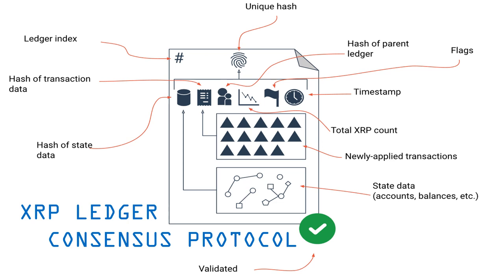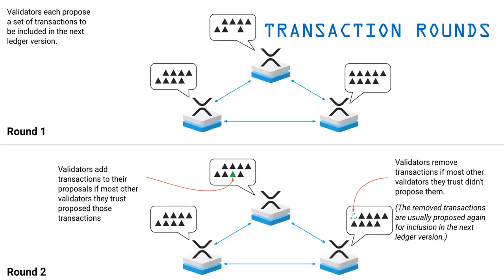Most people are aware that no more XRP can be made, but it is a good segue into invariant checking. All XRP that could ever exist has already been created. It has set amounts released from escrow over time. The transaction rules are deterministic and there is no way to create more XRP than already exists. It is impossible.